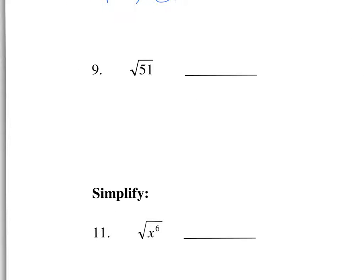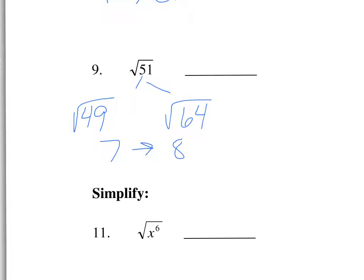The square root of 51 is between the perfect squares 49 and 64. It's closer to 49, so the square root of 49 is 7 and the square root of 64 is 8. This is closer to the 7 side than the 8 side, so it's closer to 7 — probably approximately 7.2.